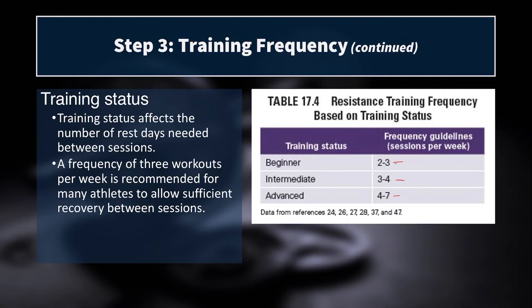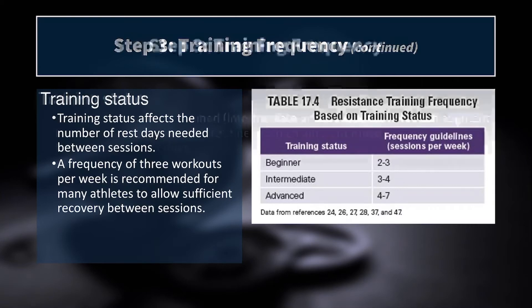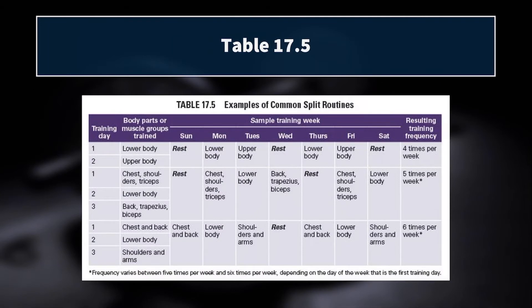This table from the textbook is a guideline, but we also need to consider each individual's recovery timeline when considering training frequency. Here are some potential training splits you can use with athletes or yourself throughout the week — just examples, each with their own pros and cons. The first is an upper-lower split: you train lower body, then upper body, rest, then lower body again, then upper body again, and rest. That's four training days per week, but your training frequency per muscle group is actually only twice per week.